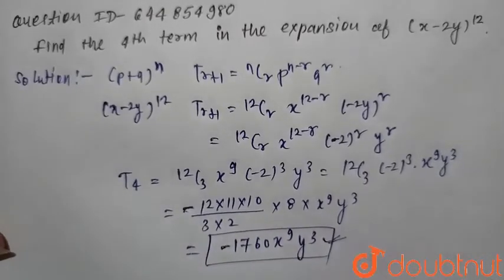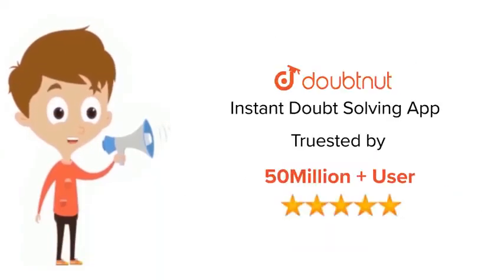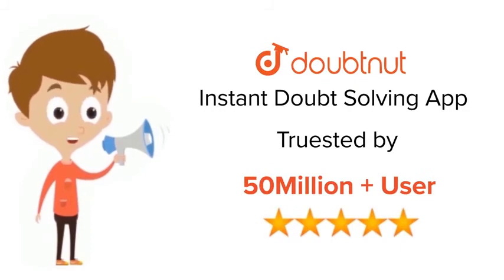So the fourth term of the expansion is -1760x^9y^3. Thank you. For class 6 to 12, IIT-JEE and NEET level, trusted by more than 5 crore students, download Doubtnet app today.